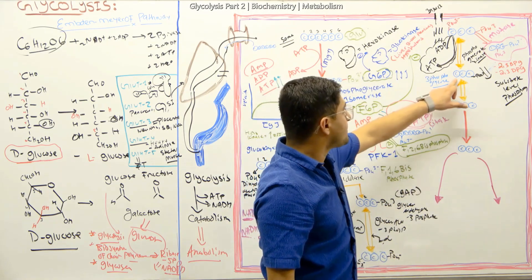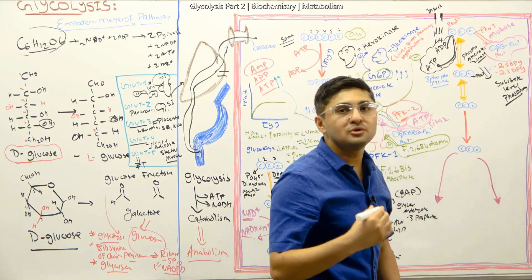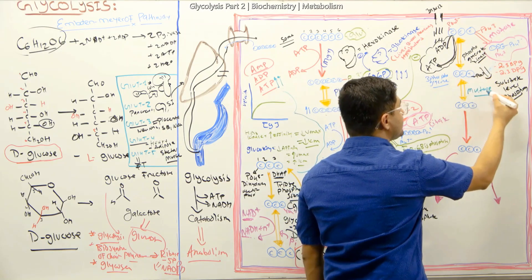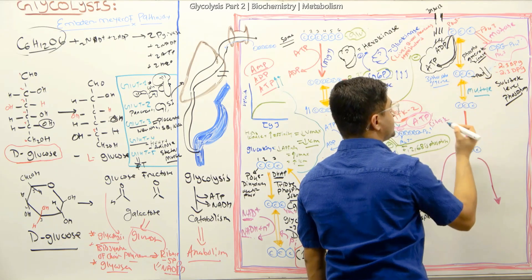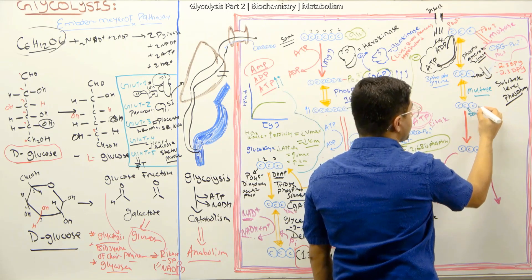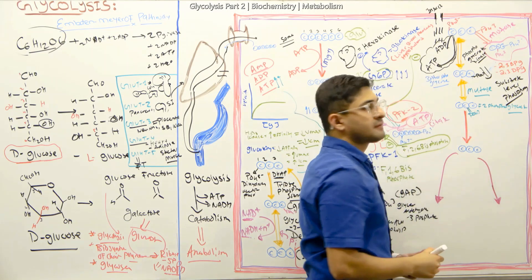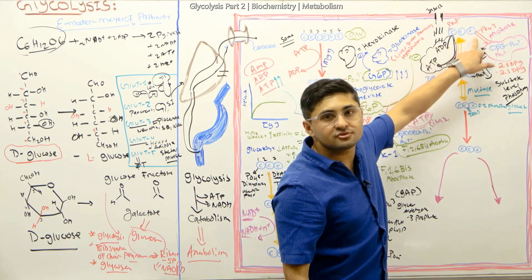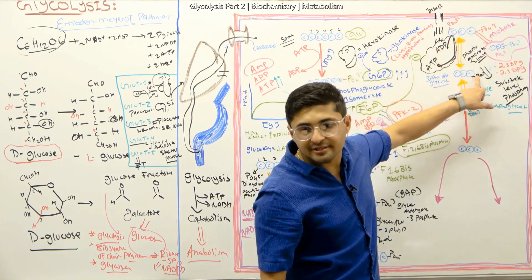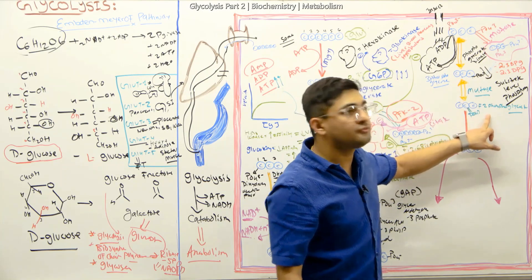After 3-phosphoglycerate, what is going to happen? This molecule is going to undergo mutase activity again. There's an enzyme called phosphoglycerate mutase, which basically moves the phosphate from carbon number three to carbon number two. Then you make 2-phosphoglycerate. So from 1,3-bisphosphoglycerate, with phosphoglycerate kinase you generate ATP and make 3-phosphoglycerate, and from 3-phosphoglycerate with the mutase enzyme you make 2-phosphoglycerate.